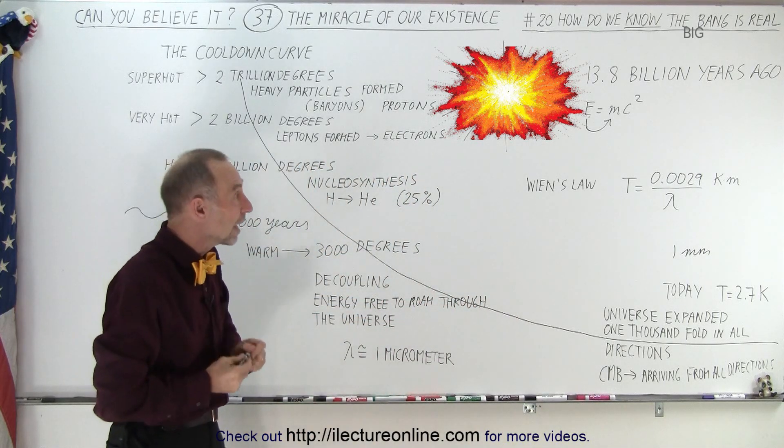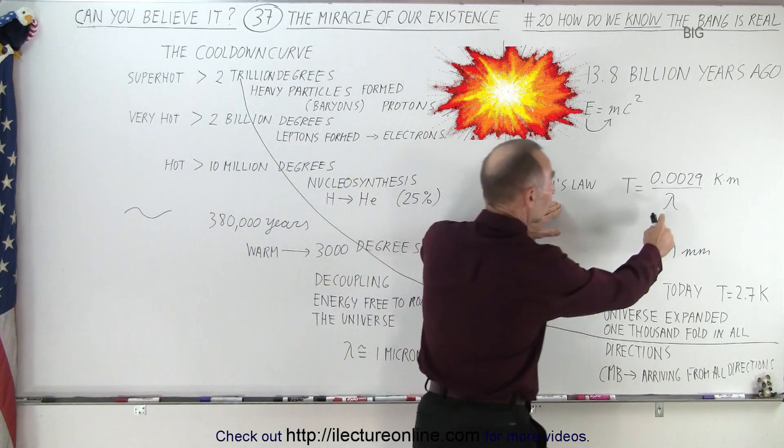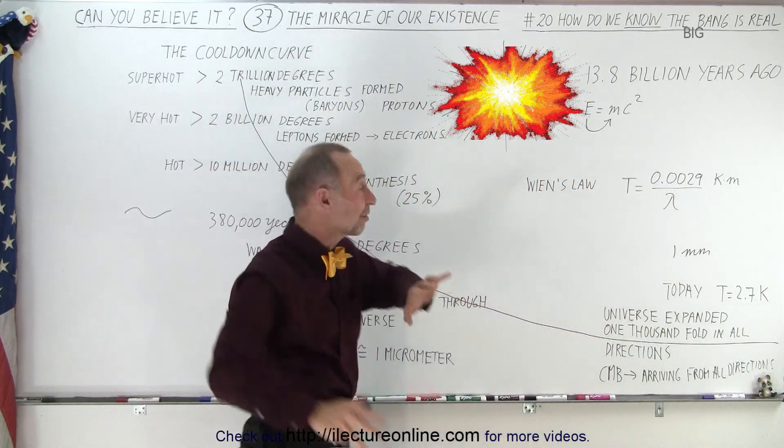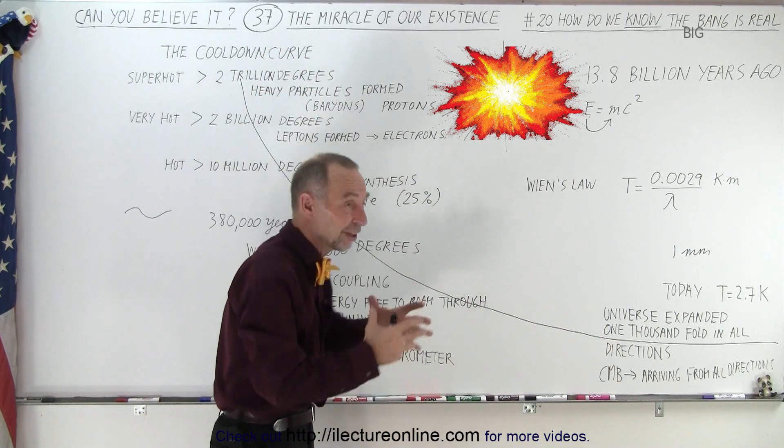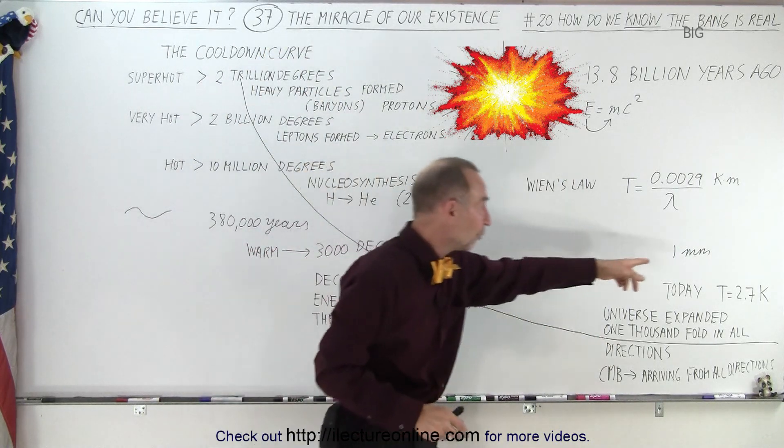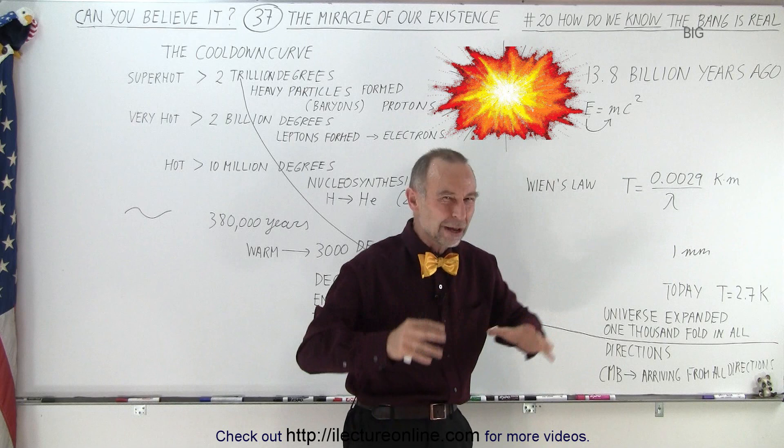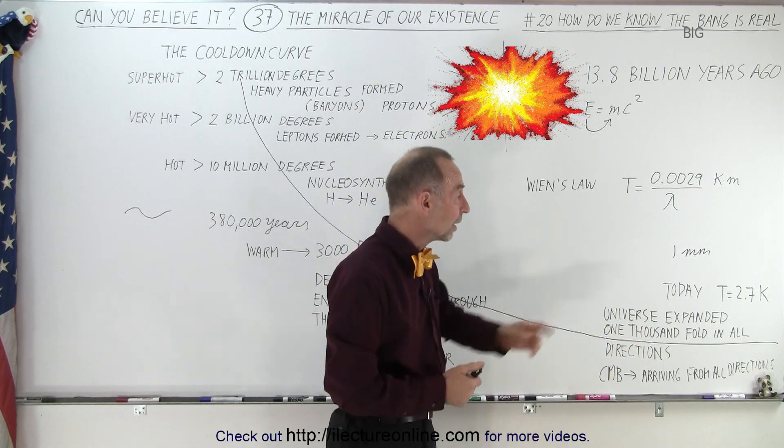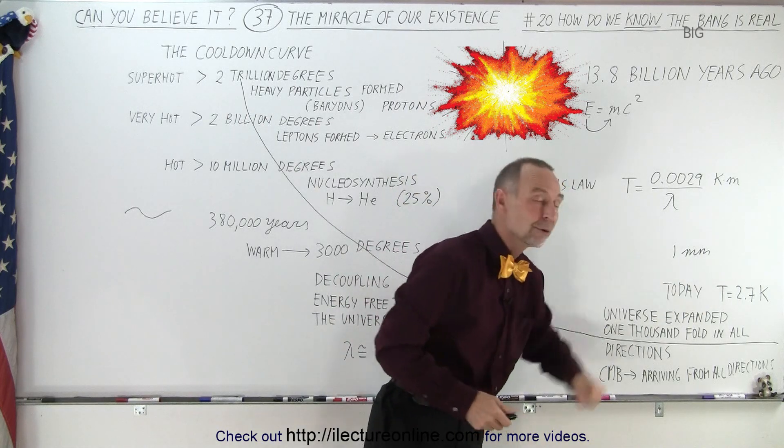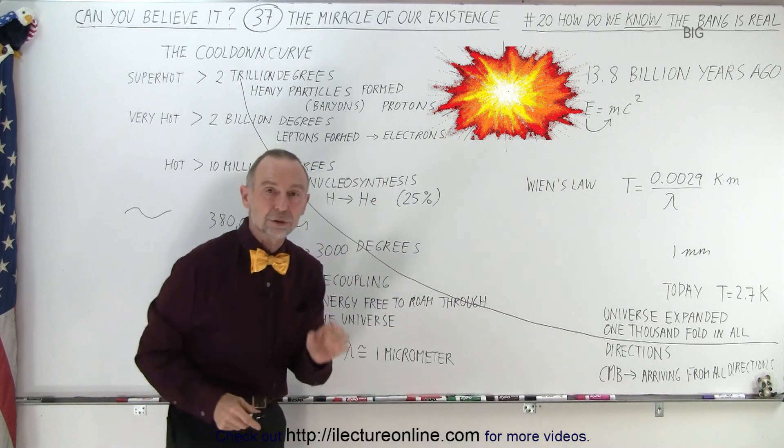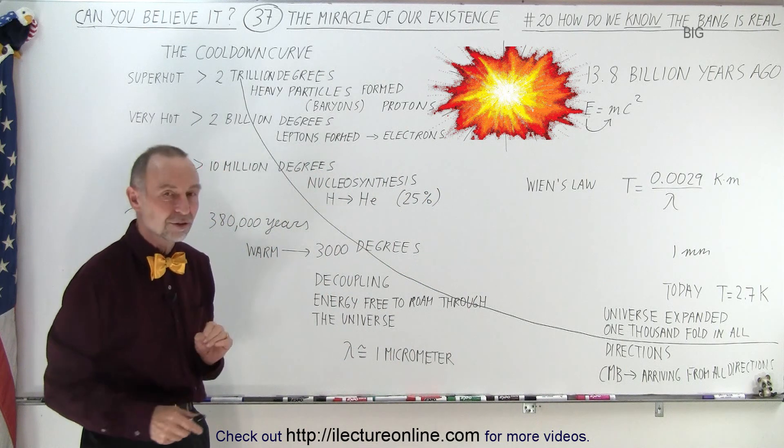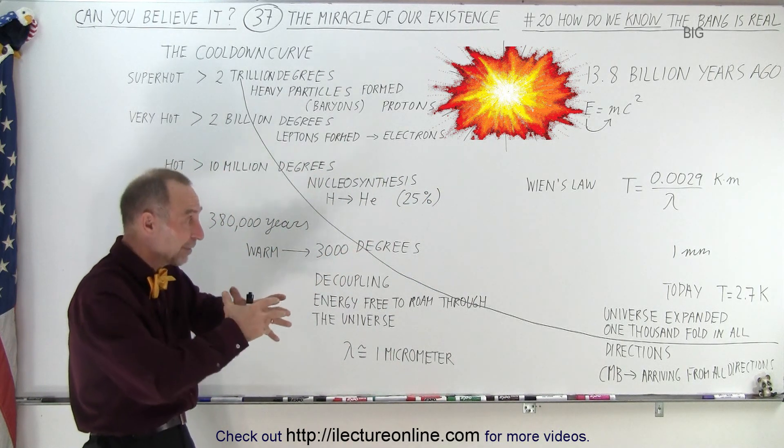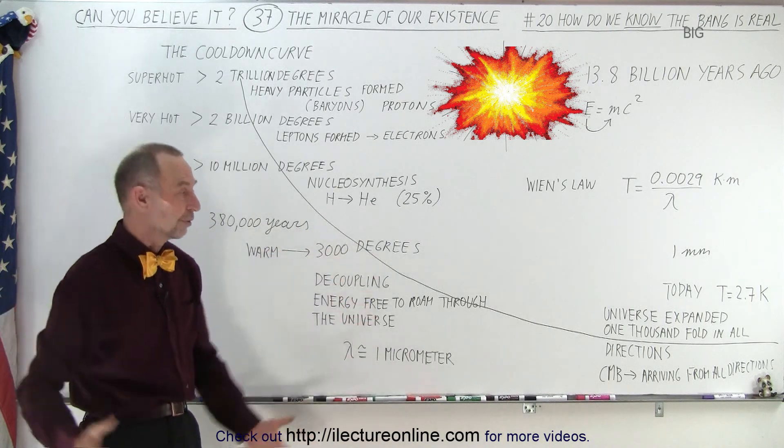And therefore today, based on Wien's law, as the wavelength keeps getting bigger and bigger, all that vast amount of energy that was left over from the very beginning of the universe, as it has stretched to a length of one millimeter, which is like microwave length, microwave radiation, kind of like what you find in your microwave oven. The temperature today in the universe has dropped to about 2.7 Kelvin, 2.7 degrees above absolute zero. So it's frigidly cold out in the universe now because of that stretch and that expansion of the universe.